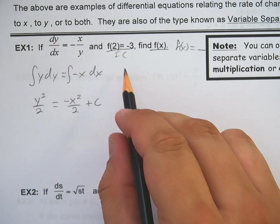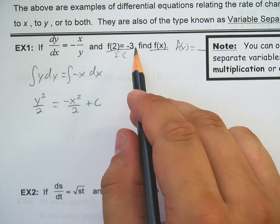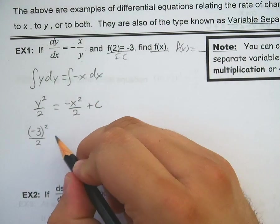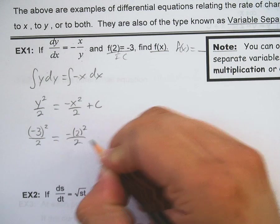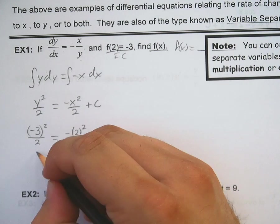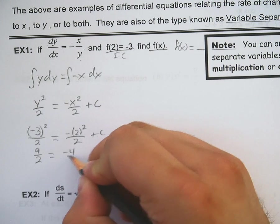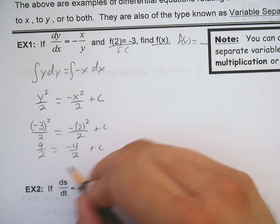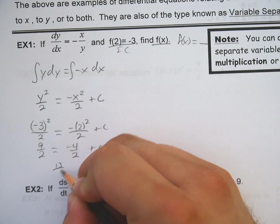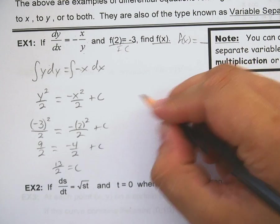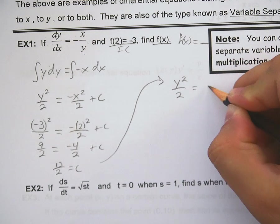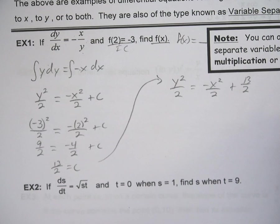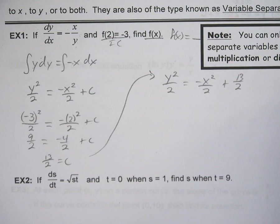So I've got my equation set up. The only problem is I've got this nasty c in here. So I'm going to use my initial condition, plug a 2 in for x and a -3 in for y. So this is going to be 9/2 equals -4/2 plus c. So add 4 halves to this side, and you get 13 halves. So my equation then, y²/2 equals -x²/2 plus 13/2.